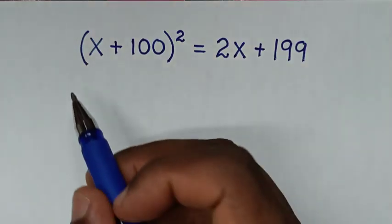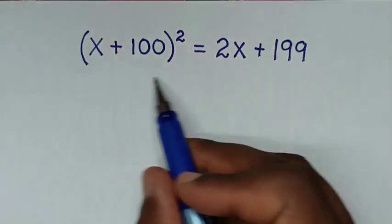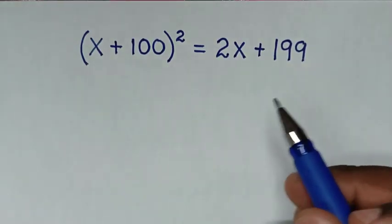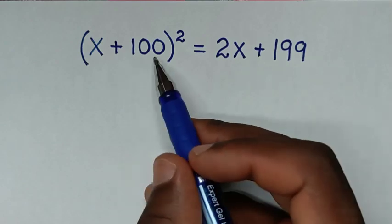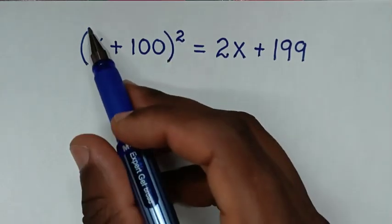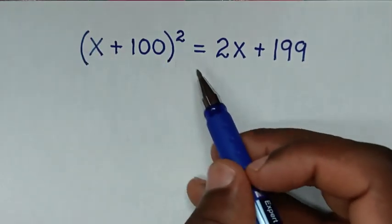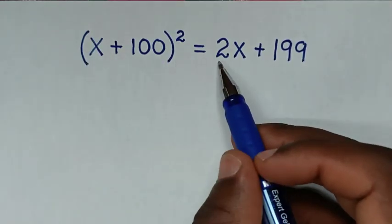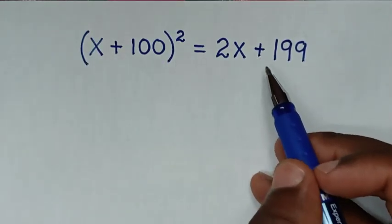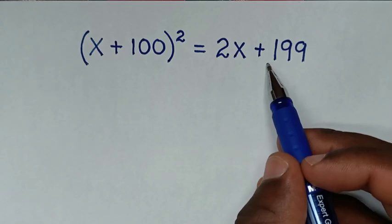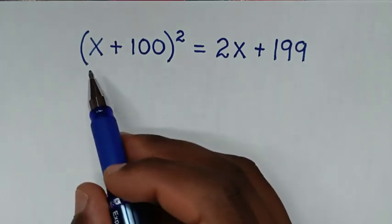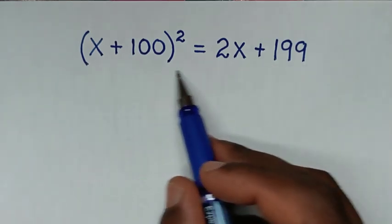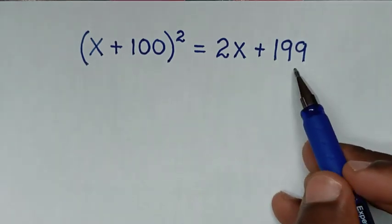Hello, you are welcome to solve this math problem which is (x + 100)² = 2x + 199, to find the value of x from this equation.